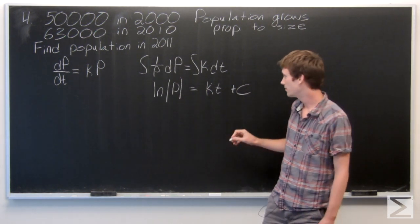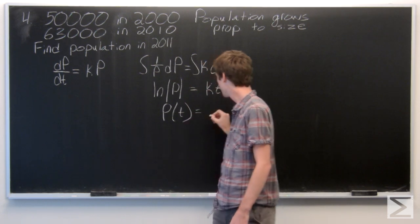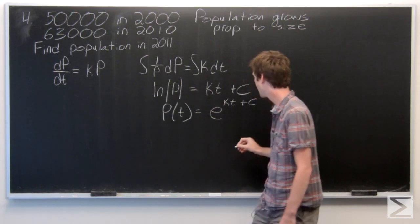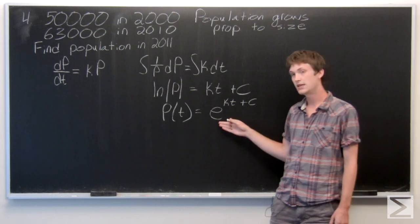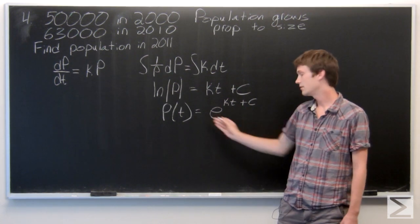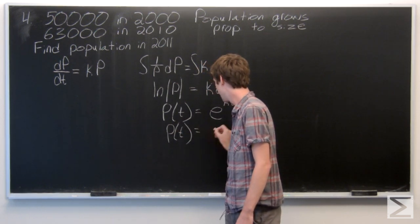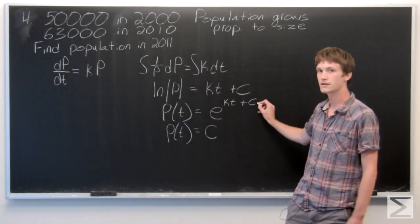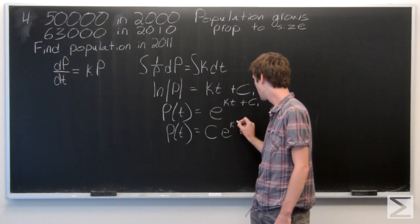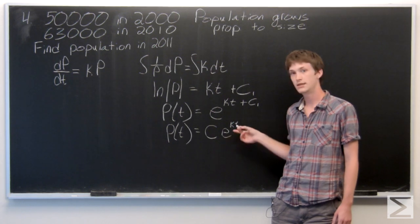Now we can solve for p. We get that p of t is equal to e to the kt plus c. Using the laws of exponents we can pull out this c into another constant, which we'll denote as c1. So we have that the population at time t is equal to some constant c times e to the kt.